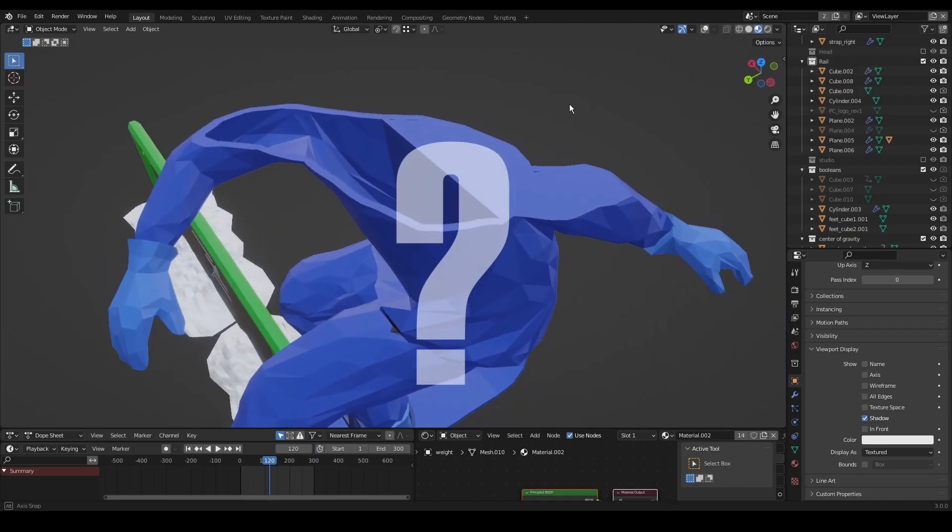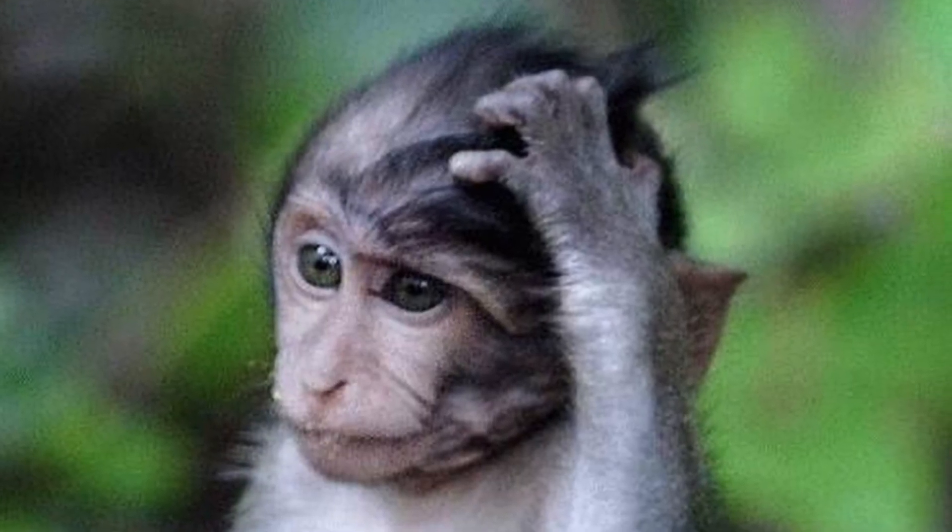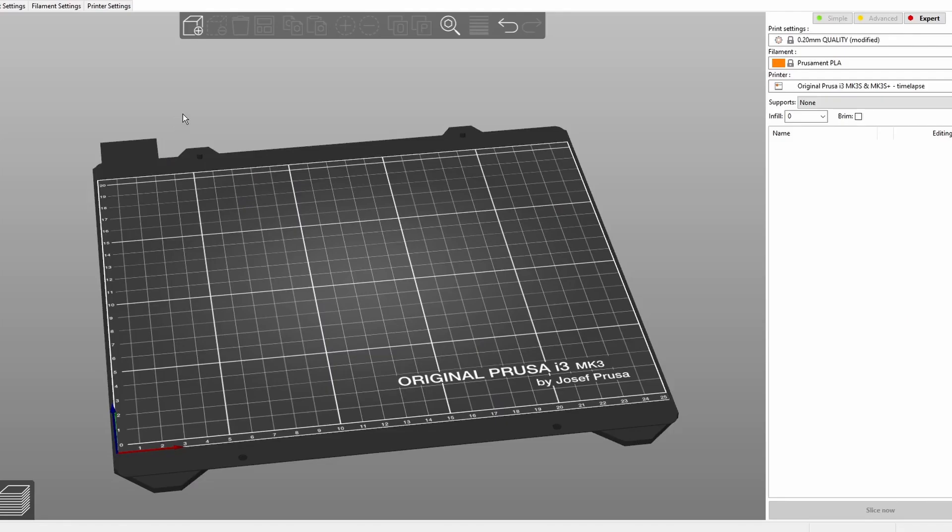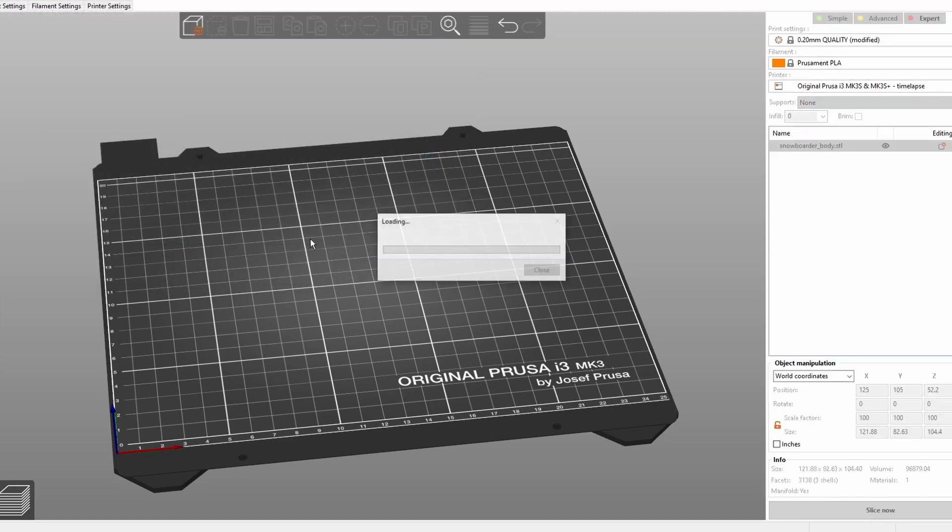But how do we print something half hollow half solid? This is going to be really difficult right? Well it turns out that this is actually incredibly easy to do in the slicer software.